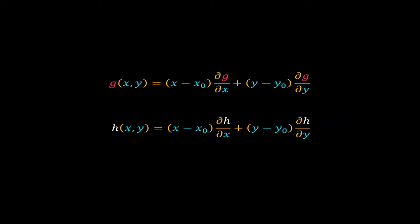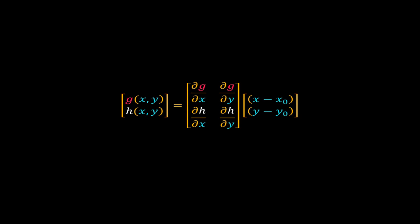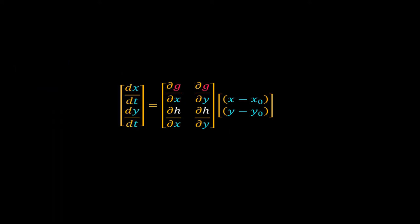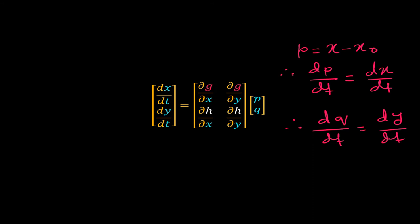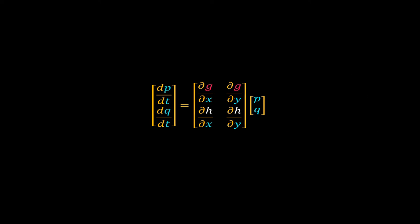Let's write this set of equation using matrix and vectors. Now we can substitute many of these terms. Using the ODEs, replace the vector of G and H by the derivative vector. Now consider X minus X0 as P and Y minus Y0 as Q. As P is equal to X minus X0, dx dt is equal to dp dt. Similarly, dy dt is equal to dq dt. This matrix of partial derivatives is called the Jacobian matrix. Note that here we are calculating the Jacobian at the steady state X0, Y0. So replace this matrix by J.